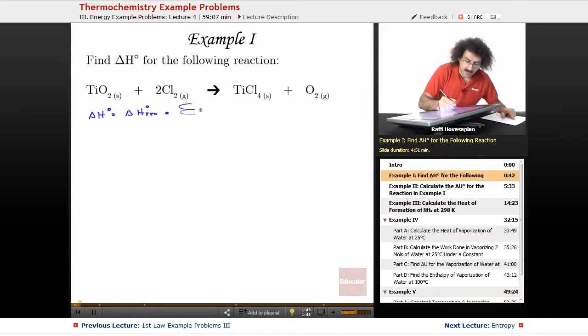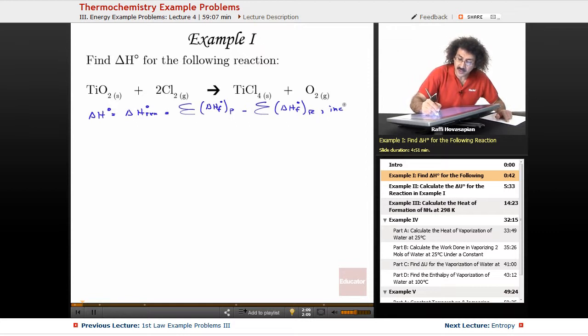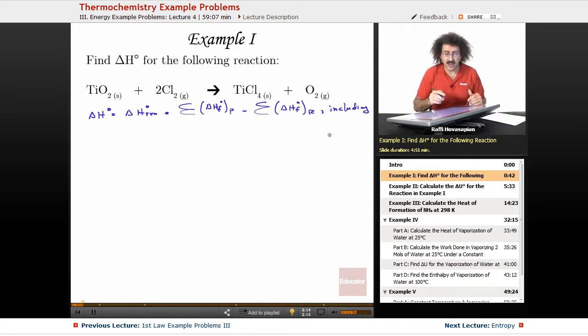It's equal to the sum of the delta H's of formation for the products minus the sum of the delta H's of formation for the reactants. And again, this is something that we already know from general chemistry. It's just products minus reactants. Whenever you see a standard table of thermochemical data, thermodynamic data, you're going to have the enthalpies of formation listed. You're going to have the standard free energies, and you're going to have the entropies listed.